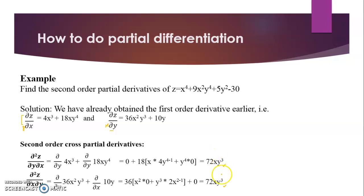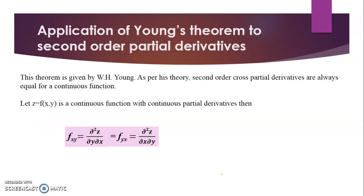Notice that both second-order cross partial derivatives are equal. This is given by Young's theorem, proposed by W. H. Young: for a continuous function, second-order cross partial derivatives are always equal. If Z = f(X, Y) is continuous with continuous partial derivatives, then ∂²Z/∂Y∂X = ∂²Z/∂X∂Y. Whenever a question asks you to verify Young's theorem, find both cross partial derivatives and confirm they are equal — if not, there is an error.